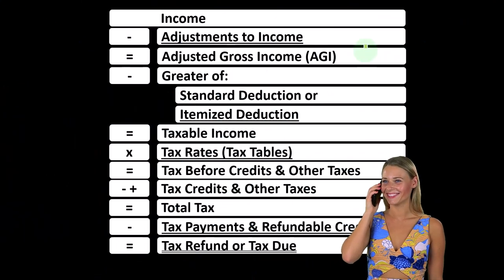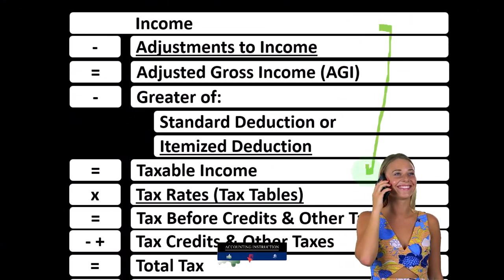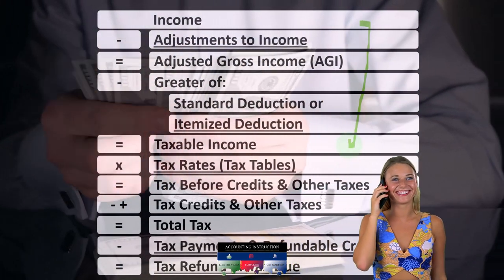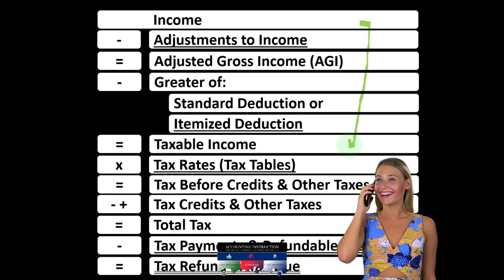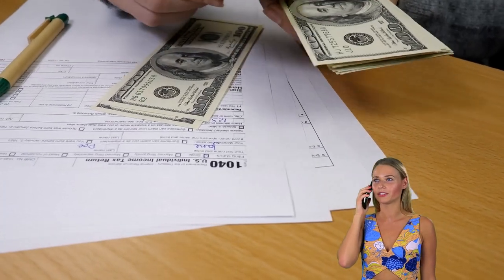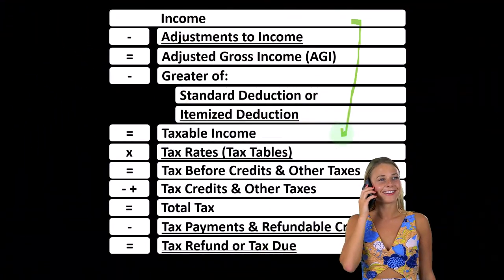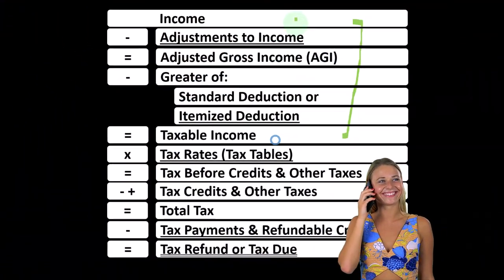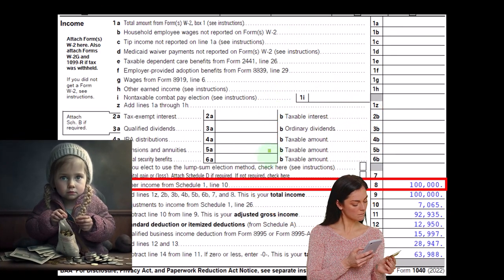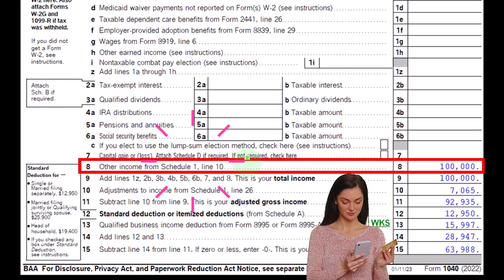Looking at the income tax formula, we're focused on line one income. The first half of the income tax formula is in essence an income statement, just an outline of scaffolding with other forms and schedules flowing into these line items — one of those being the Schedule C. Looking at the first page of the Form 1040, the Schedule C flows into Schedule 1, which flows into page 1 of the Form 1040, line number 8.